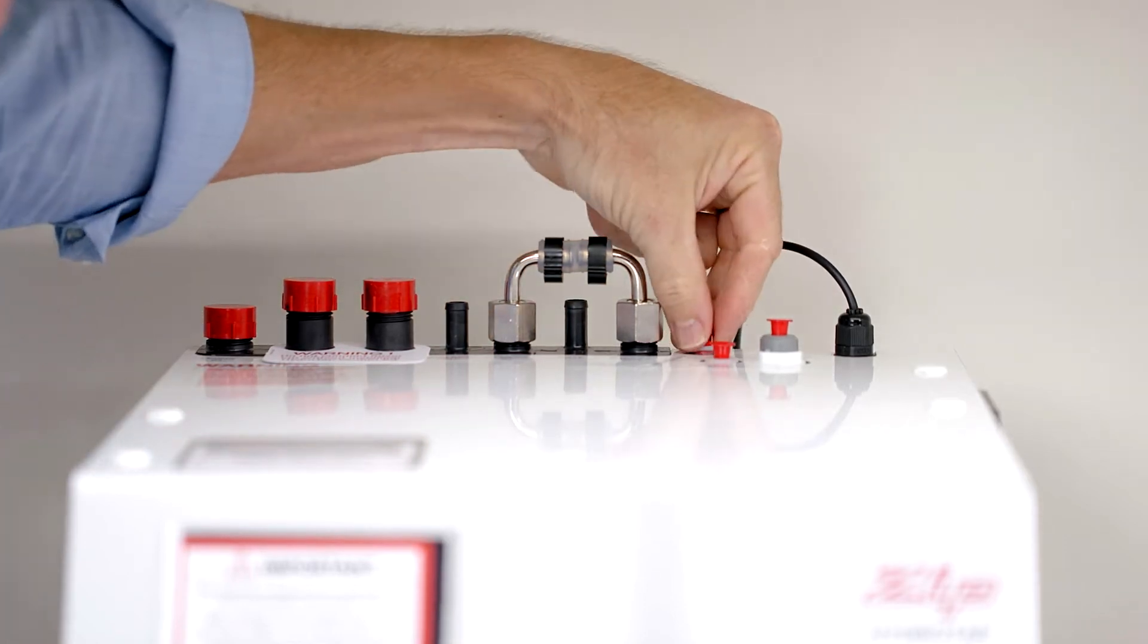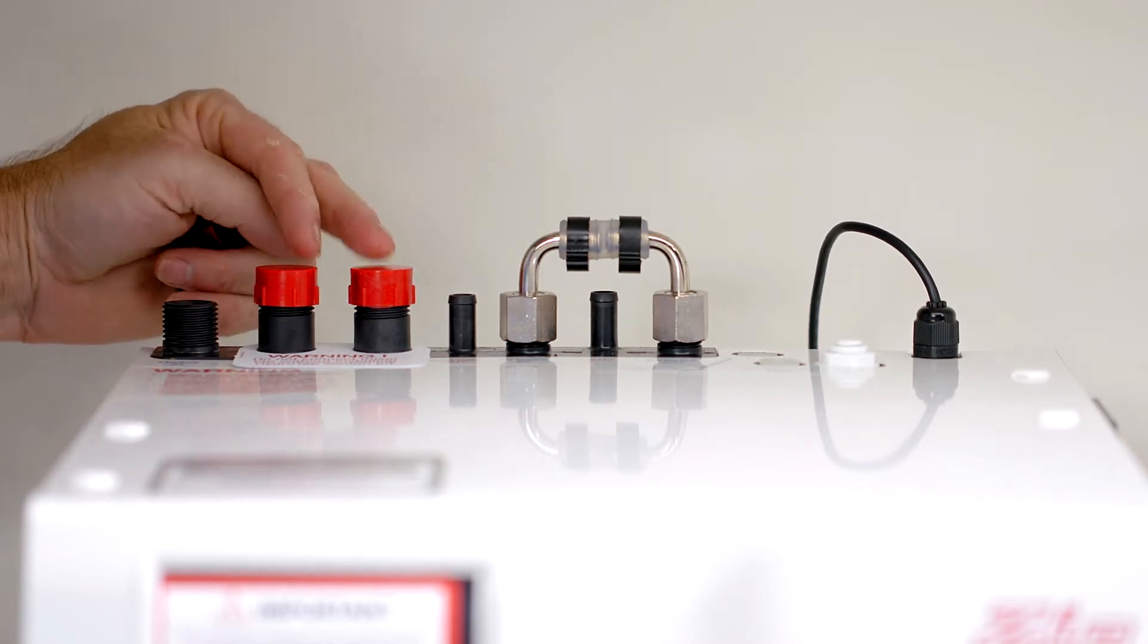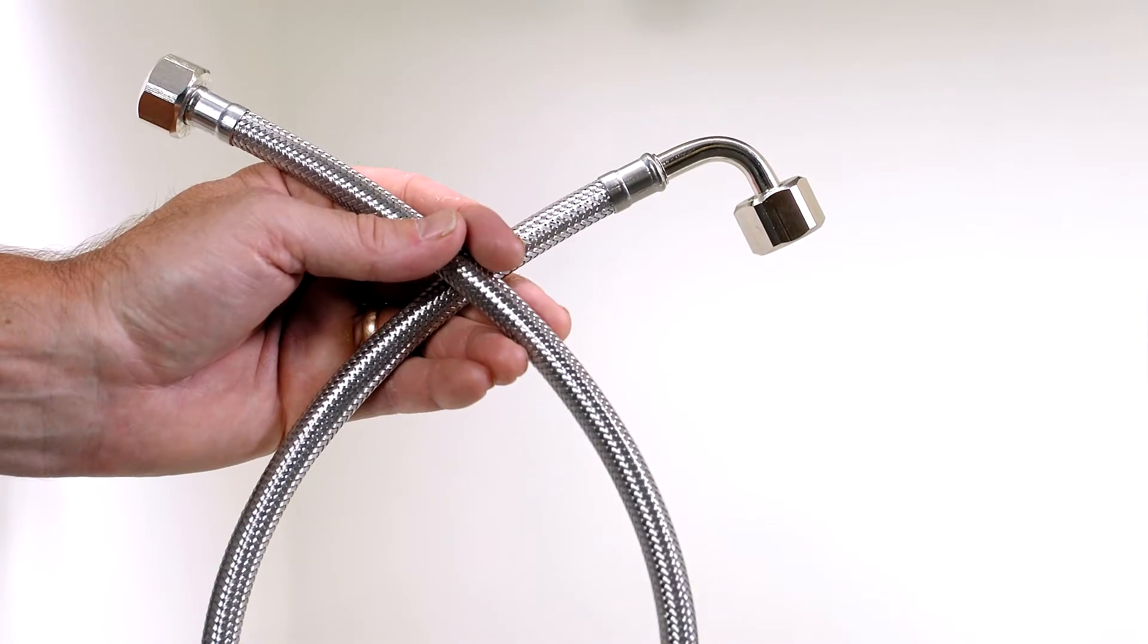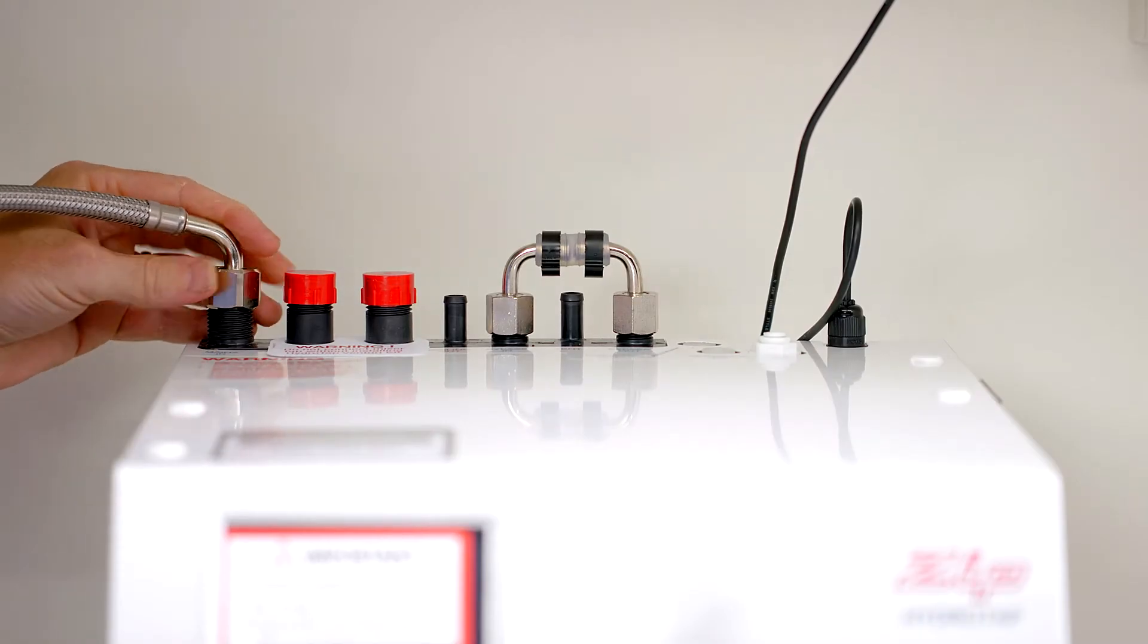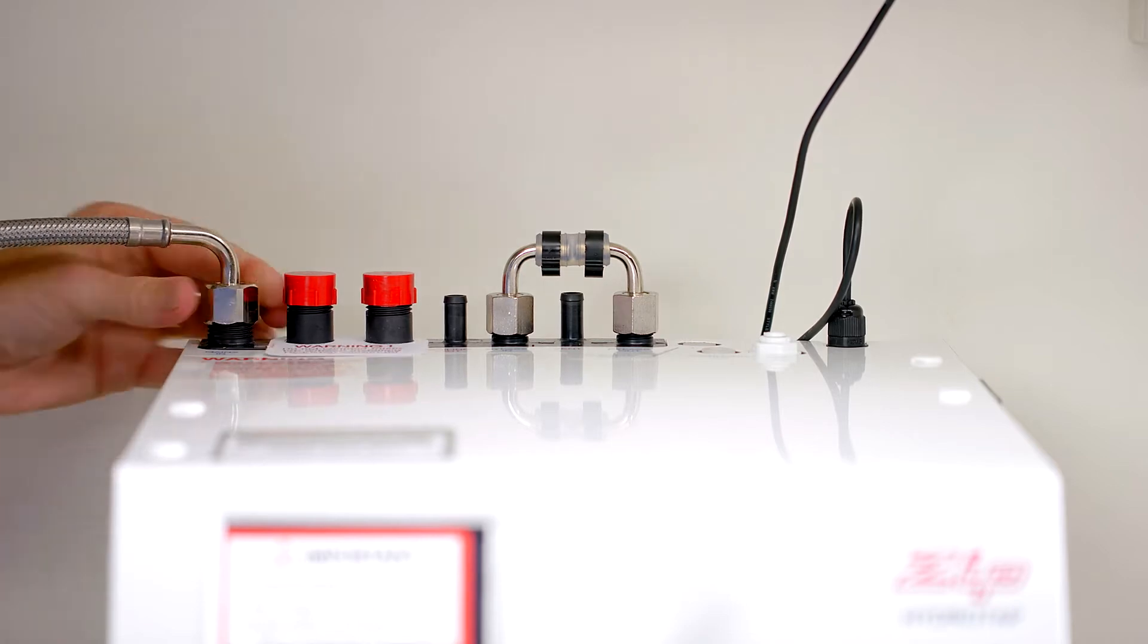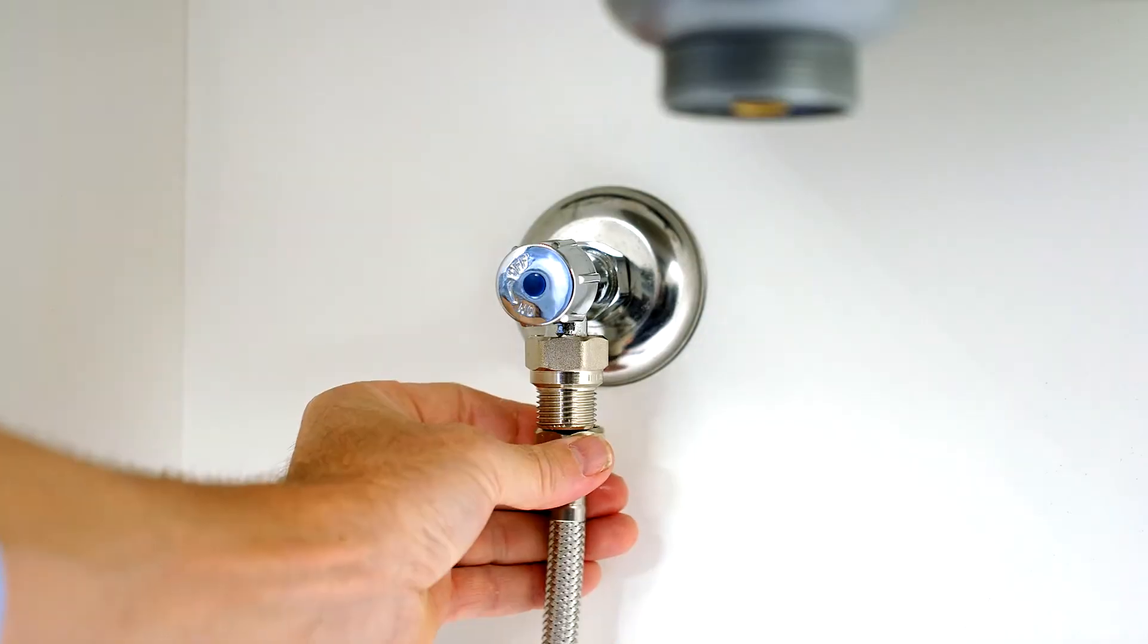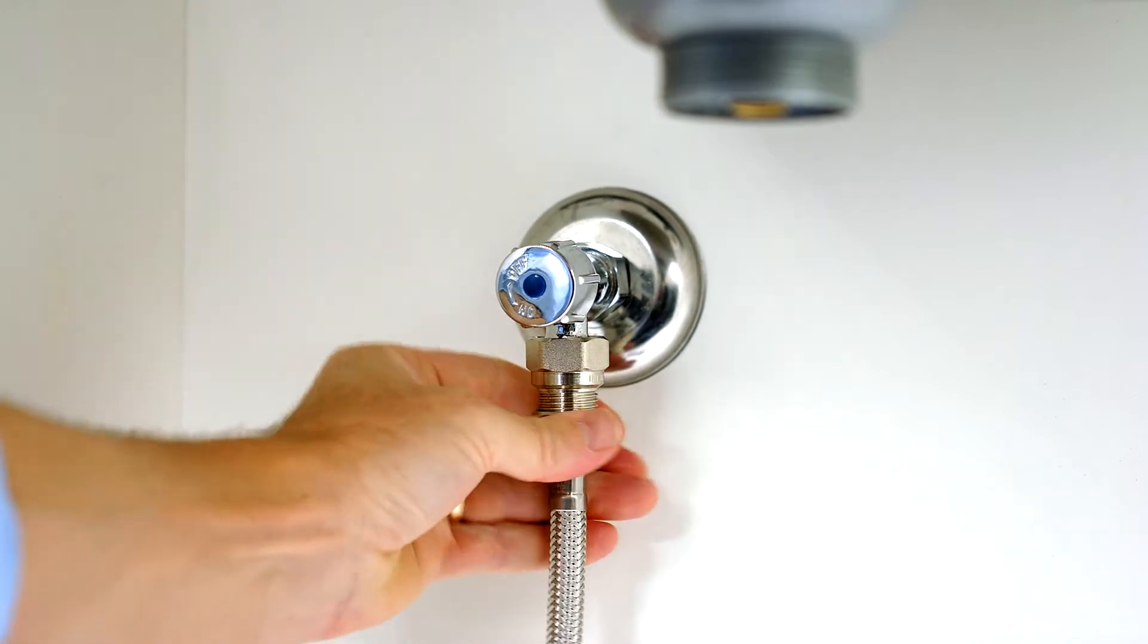Next remove the dust caps from the outlets and remove the cap from the mains in. Mixer in and mixer out are not required so leave the dust caps on. Next we need to connect the command center to the mains water supply. Use the supplied braided hose for this connection. Connect the end with the elbow to the mains in on the command center. Do this connection up finger tight and then tighten the last quarter to half a turn with a shifting spanner. Next connect the other end of the braided hose to the cold water supply stopcock. Tighten this the same way.